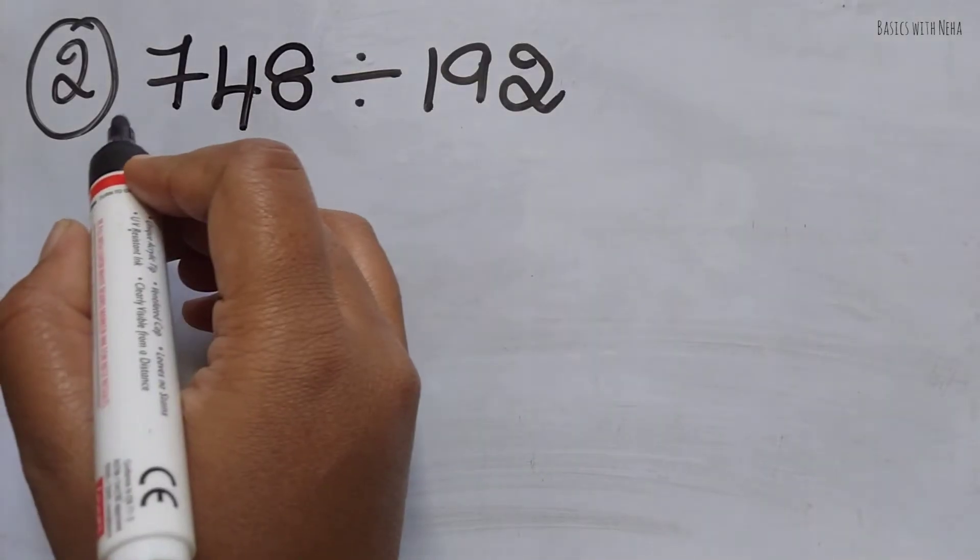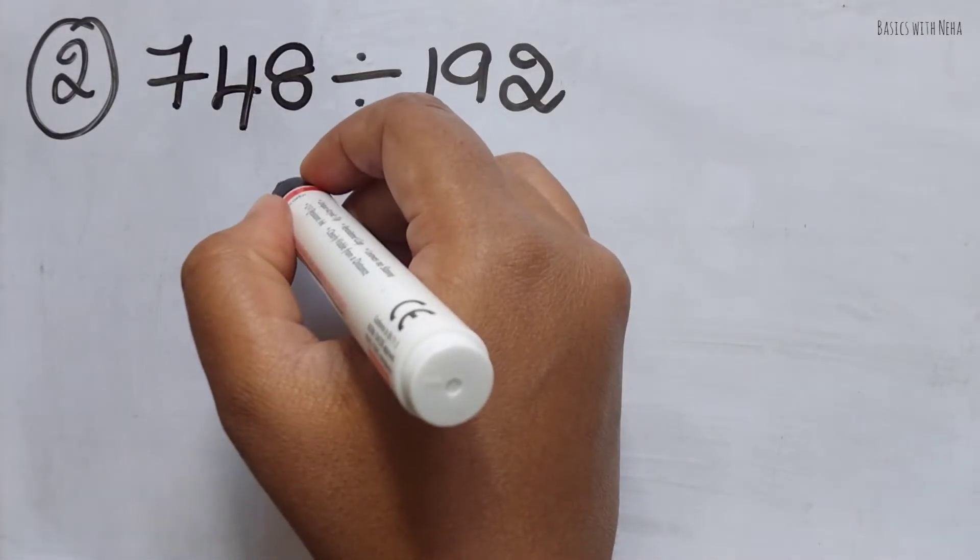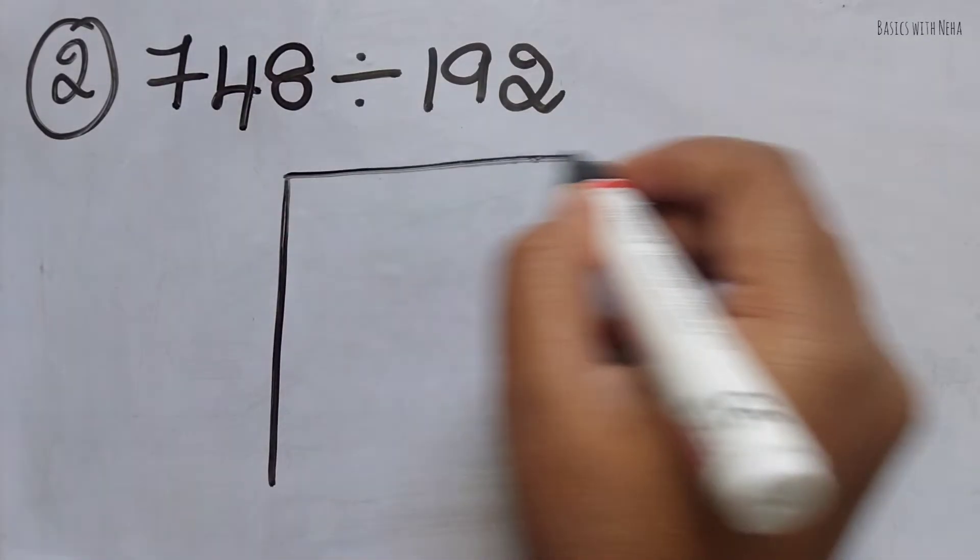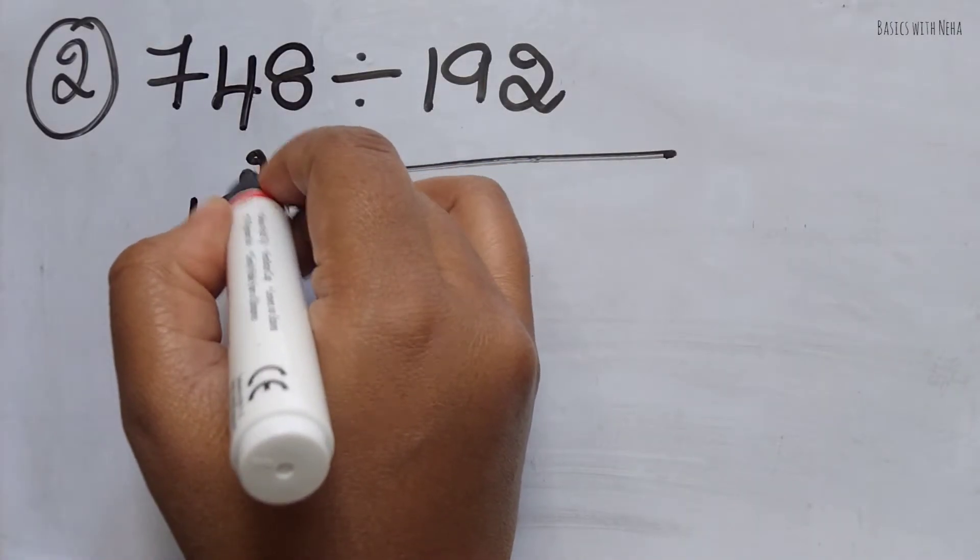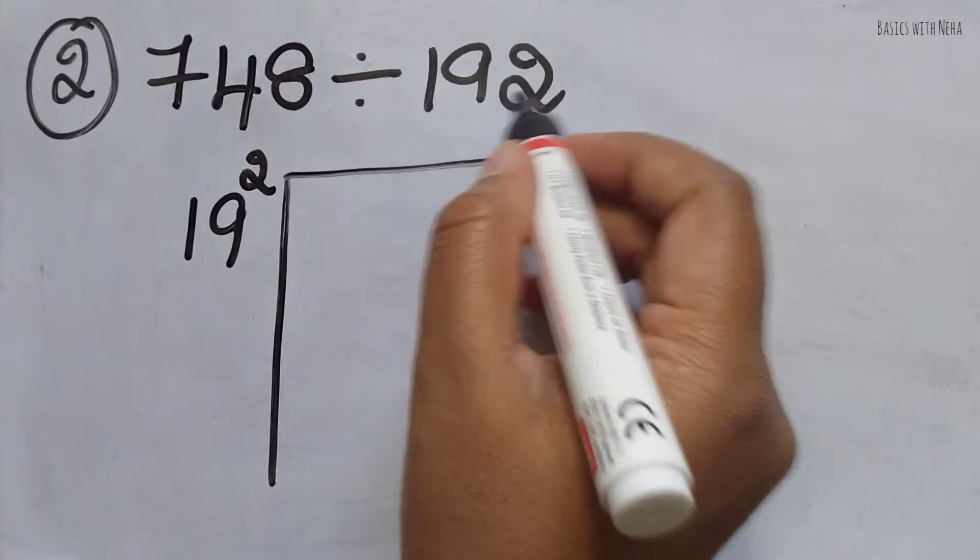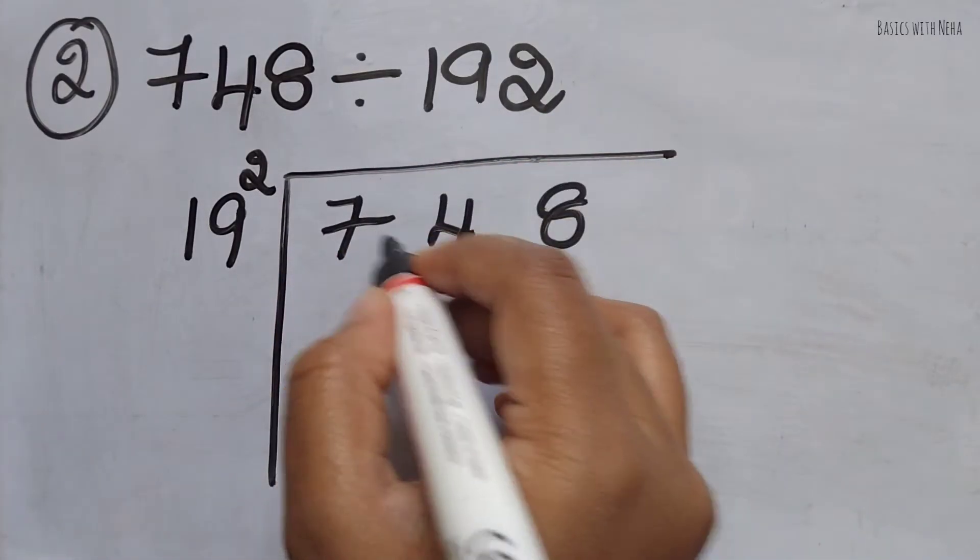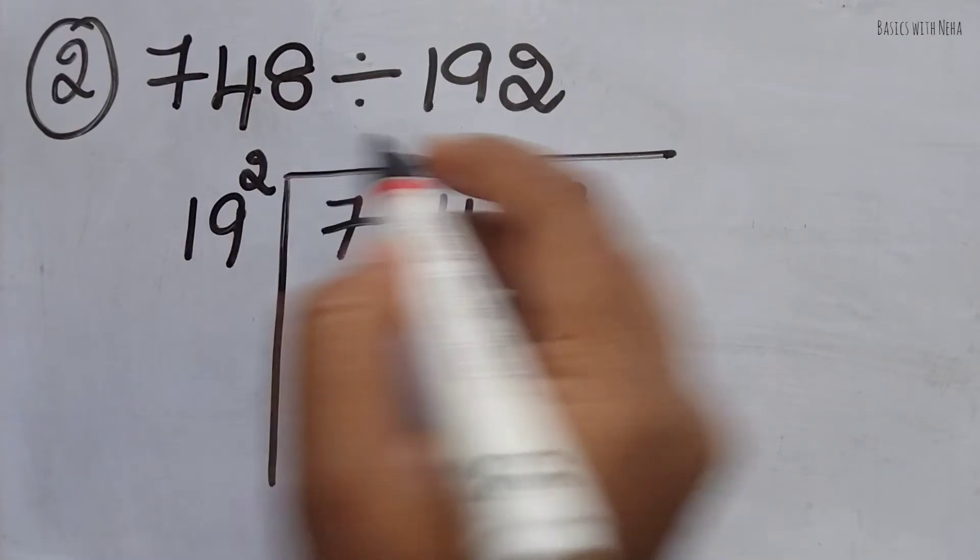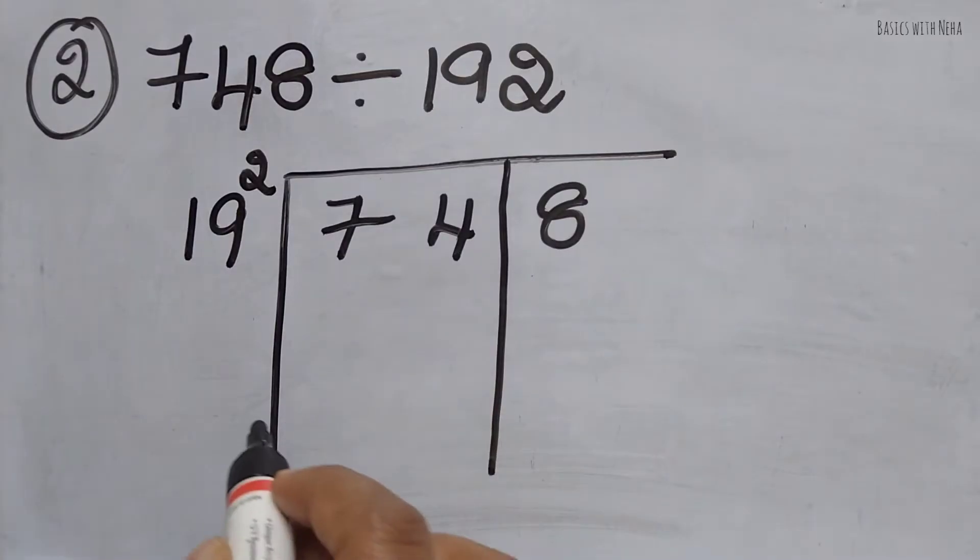The second question: 748 divided by 192. We're going to write it the same way. We'll take 19 to the power 2, that is 192, and 748 with a little space. Since one digit is in the Dvajanka, I'm going to split this number in such a way that the right-hand side will have a single digit.